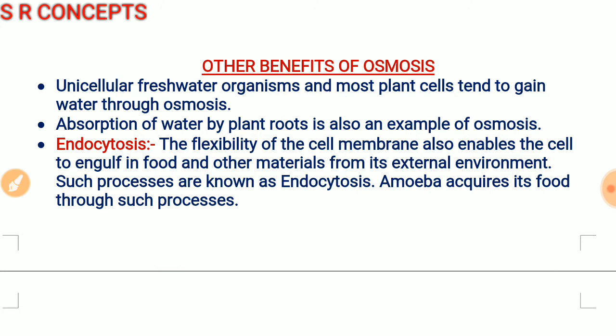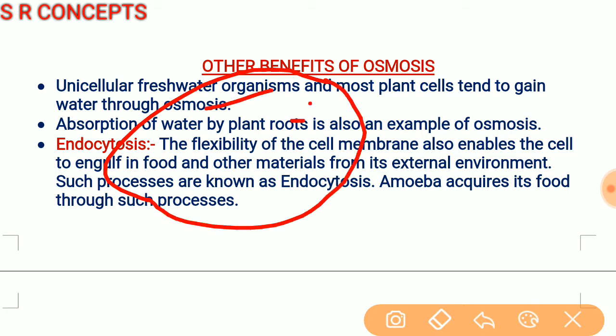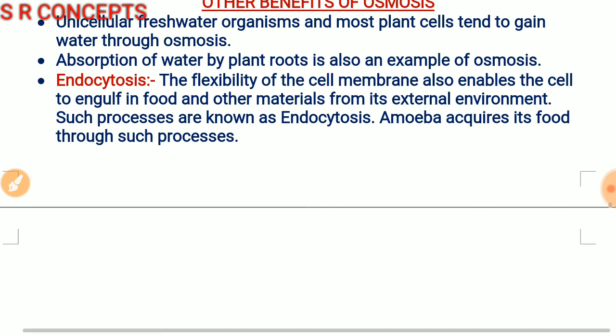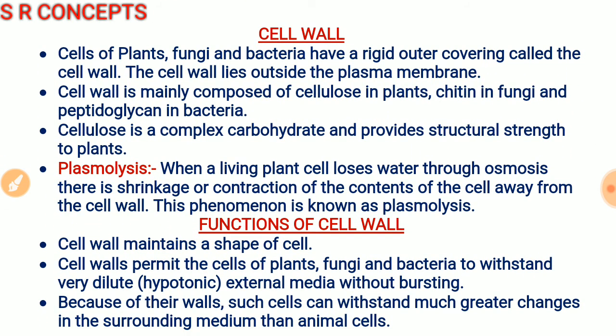In active transport, materials are brought into or thrown out of the cell even when there is no favorable concentration gradient. For example, if glucose concentration is already high inside the cell but the cell still takes in more glucose — that is against the process of diffusion — such transport requires the cell to spend energy and is called active transport.